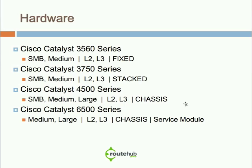The Cisco Catalyst 3560 series is more aimed at SMB or medium-sized businesses, though small businesses can use it too. What makes it unique is it has both Layer 2 and Layer 3 capabilities, where you can do routing such as EIGRP or even OSPF. This is also a fixed switch.